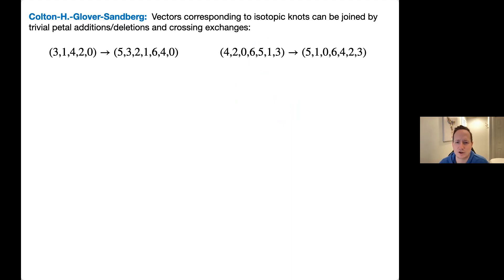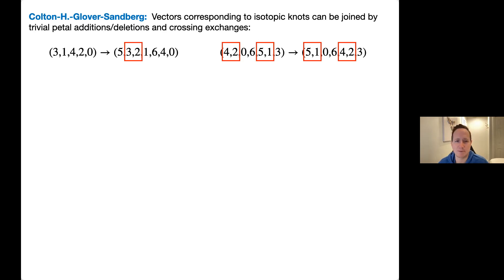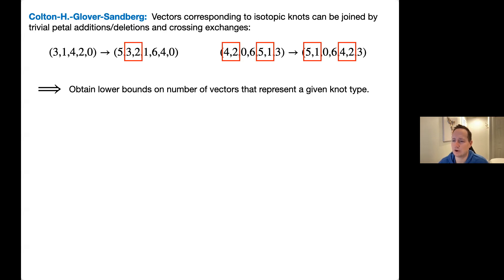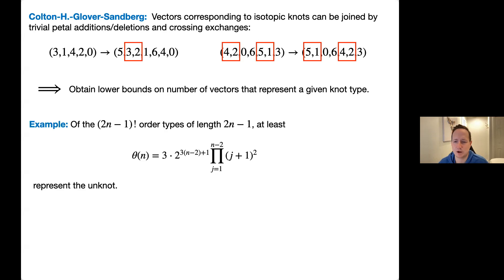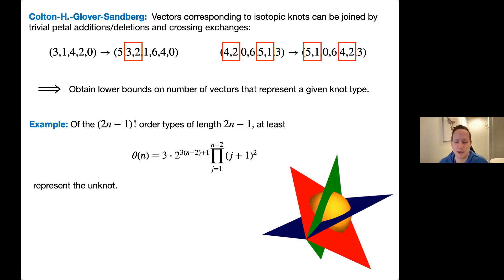I studied this problem with collaborators and showed that two vectors corresponding to the same knot can be related by a sequence of petal additions and deletions and crossing exchanges — analogous to a Reidemeister theorem for petal permutations. This also allows us to get lower bounds on the number of knots representing a given knot type. Petal permutations are particularly nice because the geometry of the spaces is fairly easy to understand.